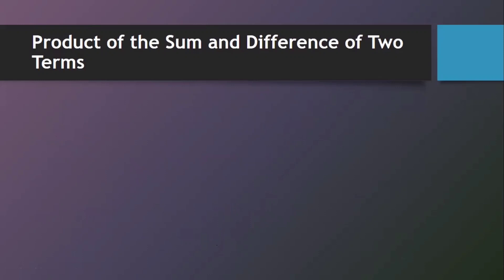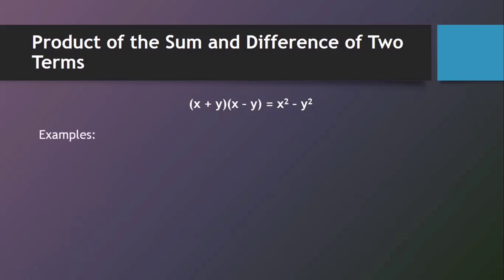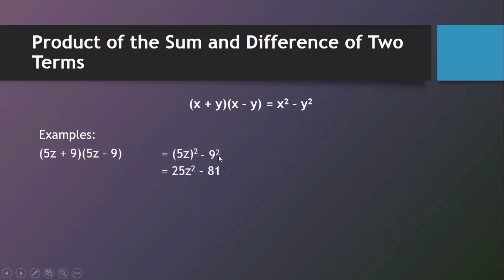Next, we have the product of the sum and difference of two terms. For a polynomial in the form (x plus y) multiplied by (x minus y), the product equals the square of the first term minus the square of the second term. Example: (5z plus 9) multiplied by (5z minus 9). Applying the formula, we square 5z to get 25z squared, and subtract 9 squared which is 81. The final answer is 25z squared minus 81.